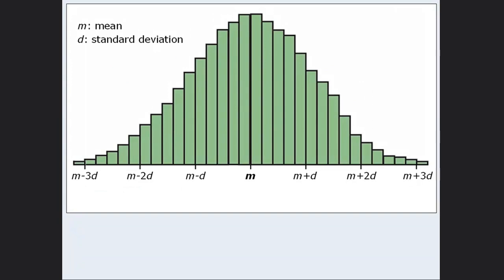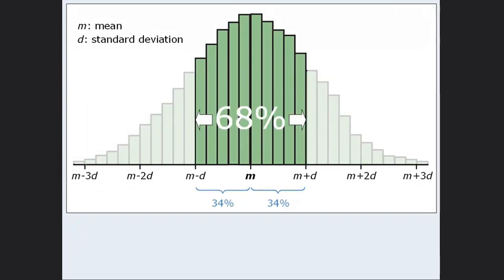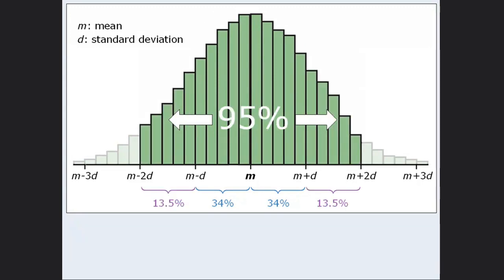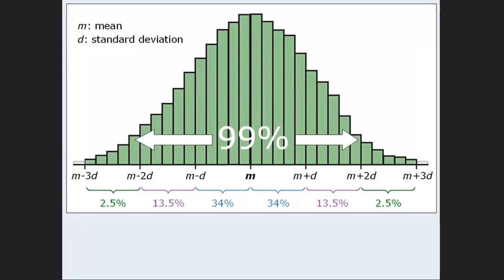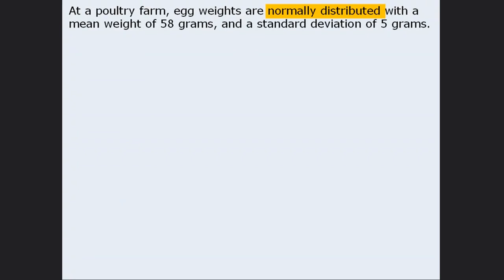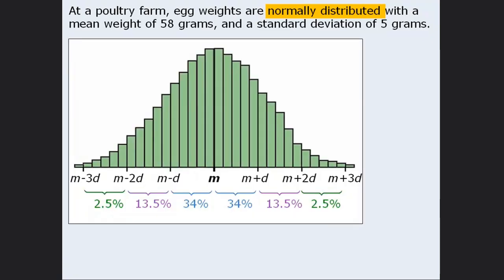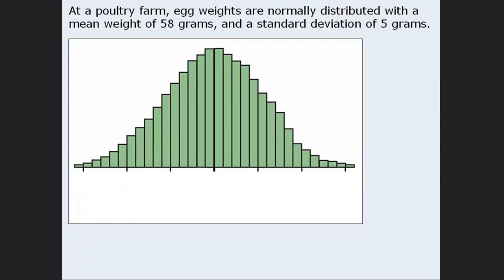In other words, for every single normal distribution, about 68% of the population is within one standard deviation of the mean, about 95% is within two standard deviations of the mean, and about 99% is within three standard deviations. This is very useful information to know about a population. So let's see how all of this looks in real life. Suppose we have a poultry farm where the weights of chicken eggs are normally distributed. The mean weight is 58 grams, situated right in the middle of the distribution.